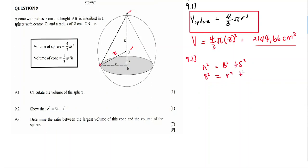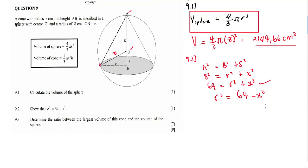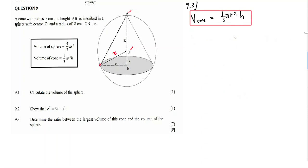So therefore, 64 equals r squared plus x squared. We use the theorem of Pythagoras. Now making r squared the subject of the formula: r squared equals 64 minus x squared. Transposing x, so r squared equals 64 minus x squared. This is our final answer for 9.2.